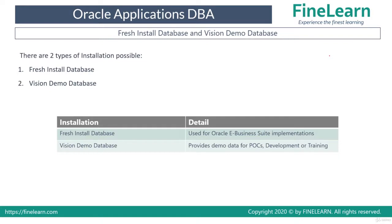There are two types of databases available when installing Oracle E-Business Suite. You can install a fresh database — the main purpose of which is for actual implementations of Oracle E-Business Suite. If a customer wants to implement Oracle E-Business Suite, they will always use a fresh install database. Alternatively, there is a Vision demo database, which is used only for proof of concept, development, or training. For the actual implementation you never use the Vision demo database — you always use only a fresh install.